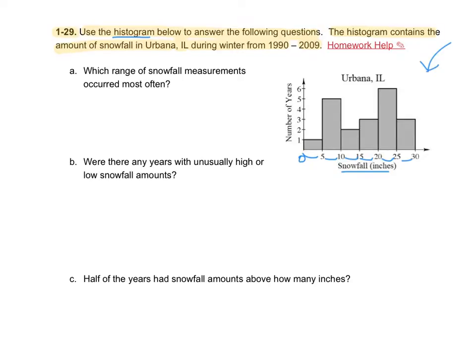We also need to look at the y-value. This is the number of years. For example, for one year, it looks like we had a snowfall between 0 and 5 inches. If I look for 5 years, we had snowfall right here, between 5 and 10 inches.